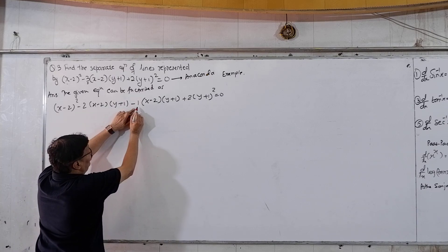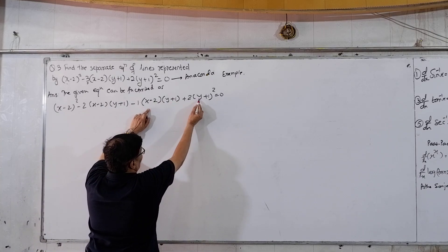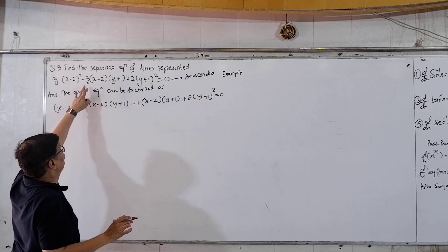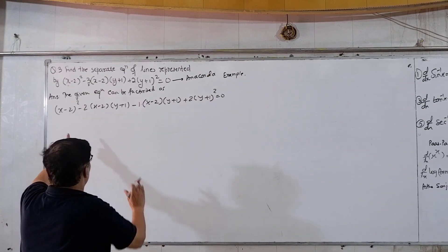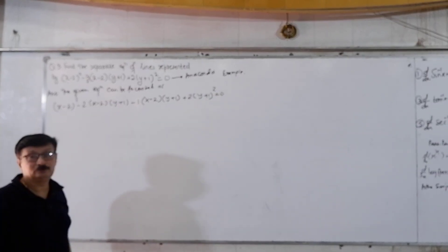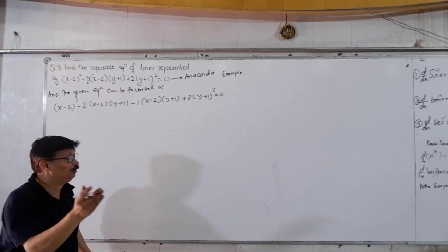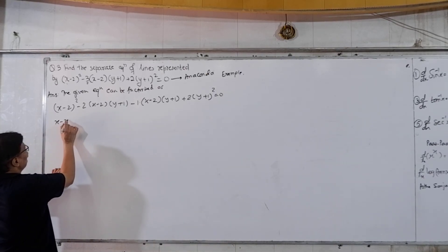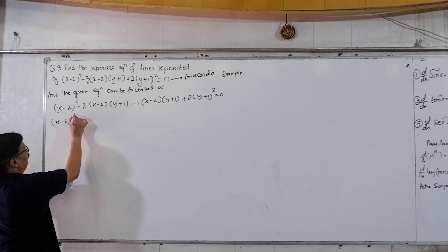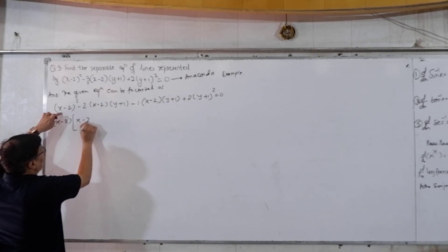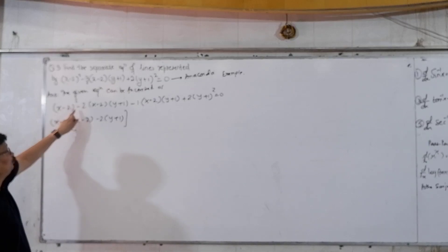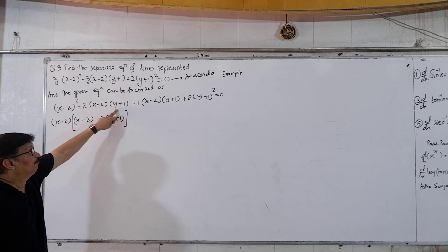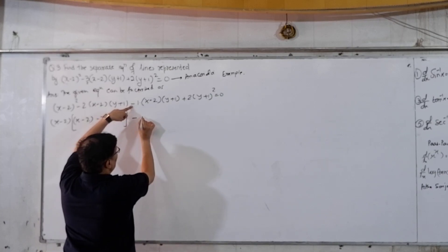Minus 1 times (x minus 2)(y plus 1), plus 2 times (y plus 1) whole square. Now take minus 2 common. So here remains (x minus 2) minus 2 times (y plus 1), and then (x minus 2) minus 2 times (y plus 1). Here take minus sign common, and here take (y plus 1) common.